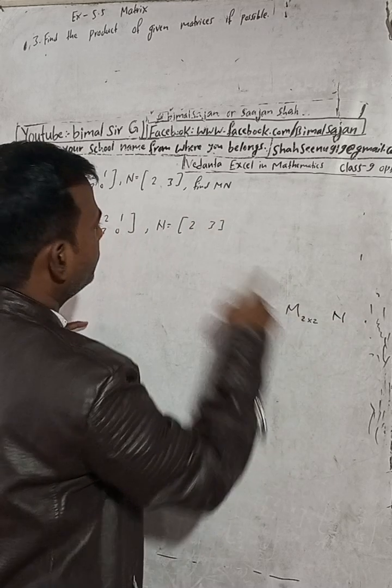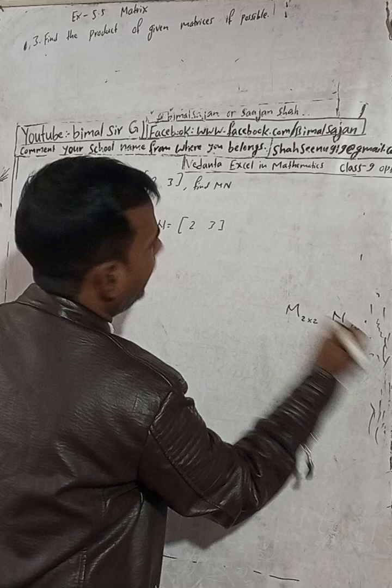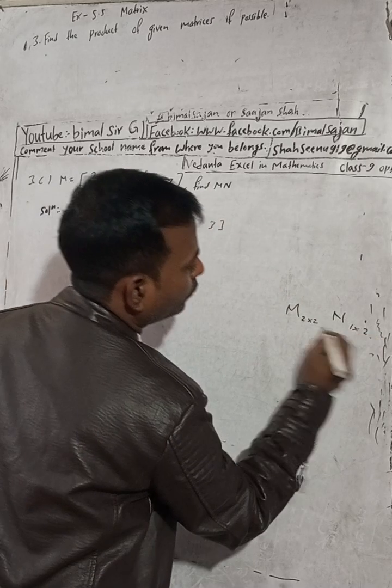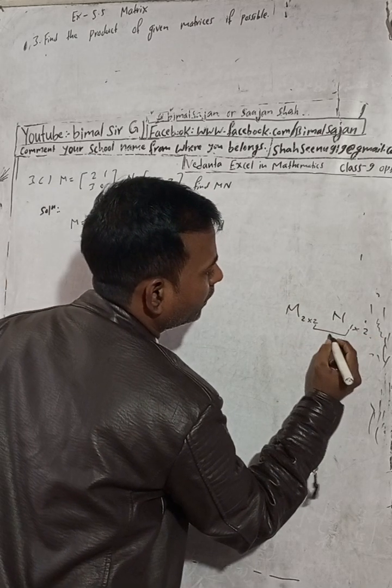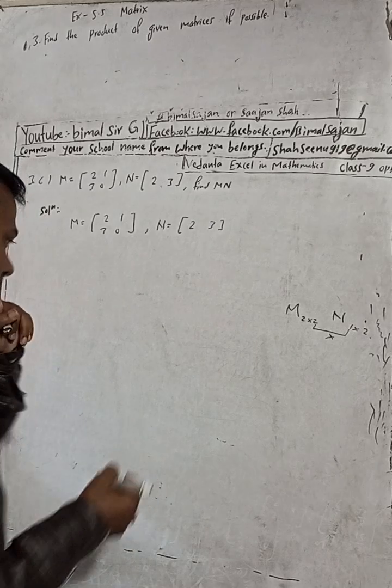We have to find MN. For matrix N, there is 1 row and 1, 2 columns. So the inner dimensions — columns of M and rows of N — are not equal. That's why the product is not defined.